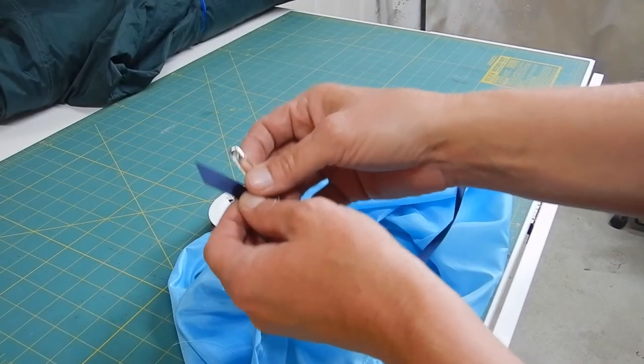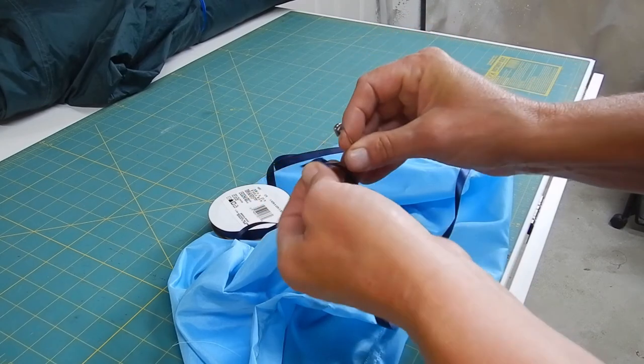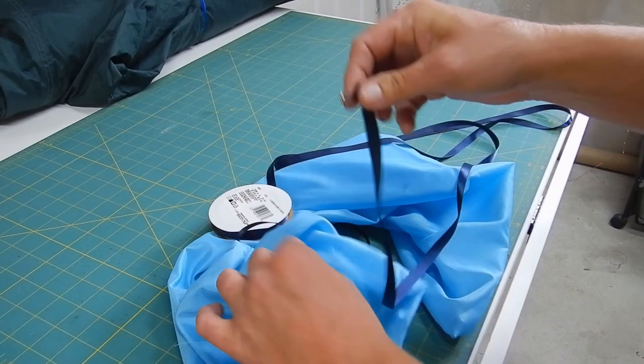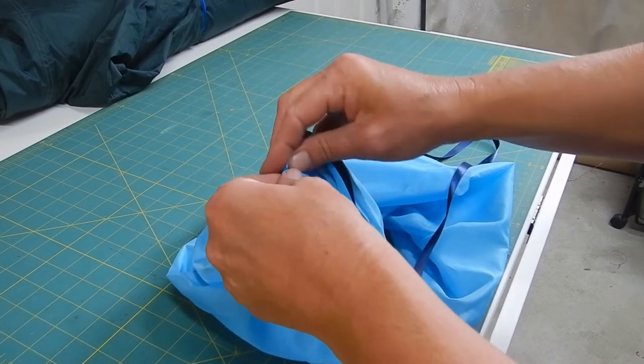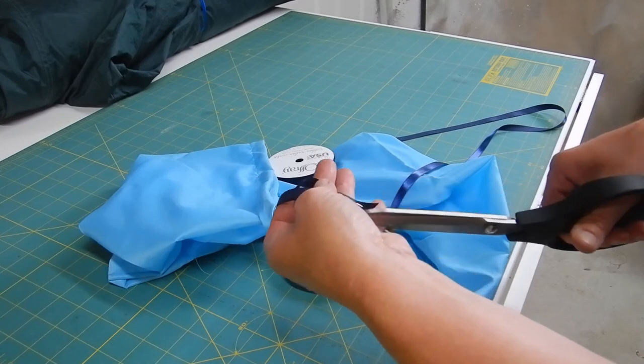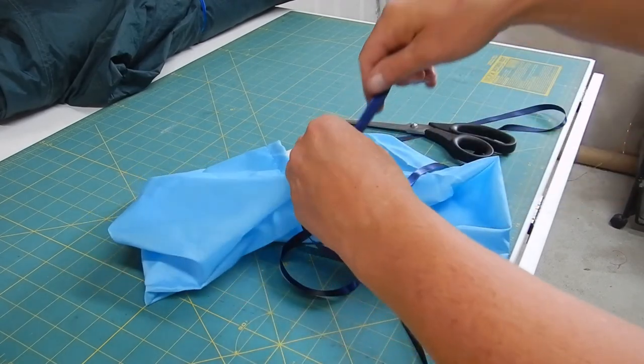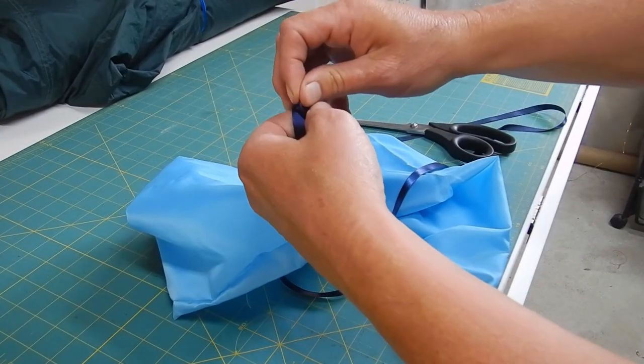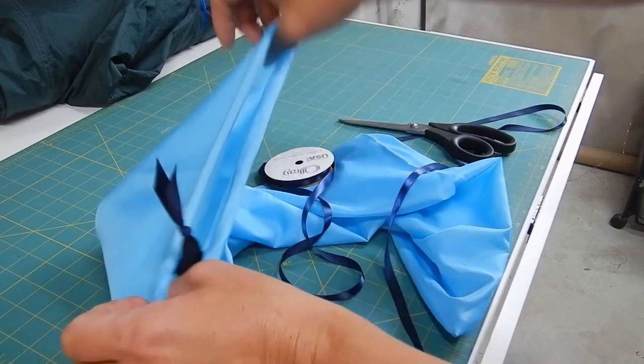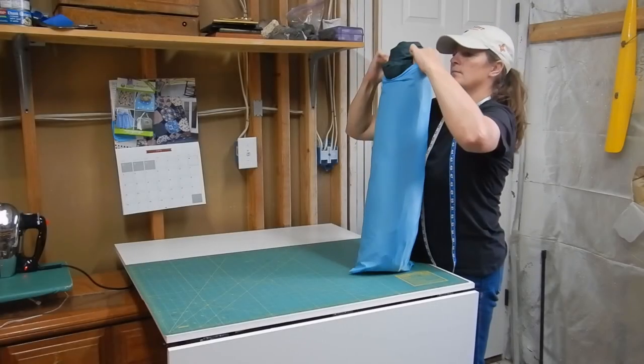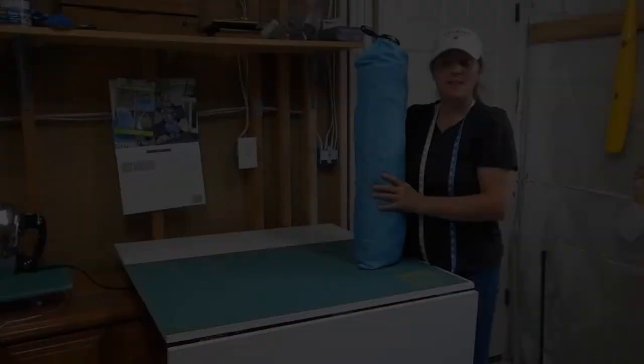Now I'm just going to take some satin ribbon and put a, just thread it through my casing. I like to do that with a pin on the end. Makes it a little easier to push it through. And I will just tie a knot here.